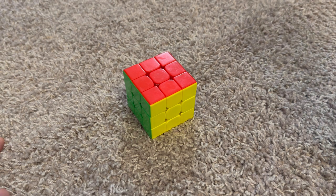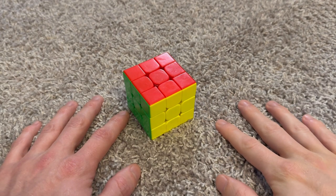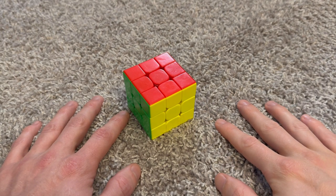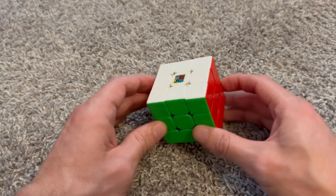Cross first, all edges in place with edge orientation on the last layer. And then corners, put all the corners in place and then rotate them two at a time until the whole cube is solved. Anyway, that's just an overview of that. Hopefully that made sense.